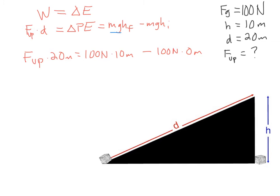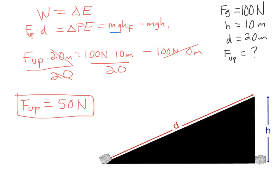After substituting in, we realize that the initial height is 0 meters, so this term is going to go away. And now all you need to do is take 100 times 10 and divide by 20 to get your final answer for force. When you solve for the force, it ends up being equal to 50 newtons.